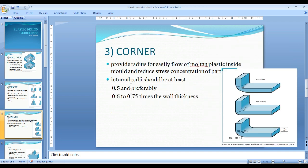Next is corner radius. Rounded radius allows easy flow of molten plastic inside a mold and can reduce stress concentration in parts. Corners are provided on the part for easy flow of molten plastic inside the mold and to reduce stress concentration.